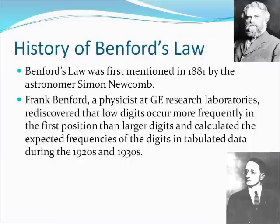During the 1920s and 1930s, he collected more than 20,000 observations from diverse data sets such as areas of rivers, atomic weights of elements, and numbers appearing in Reader's Digest articles. He then calculated the expected frequencies of the digits in tabulated data. He found that about 31% of the numbers had 1 as the first digit, 19% had 2, and only 5% had 9 as a first digit.